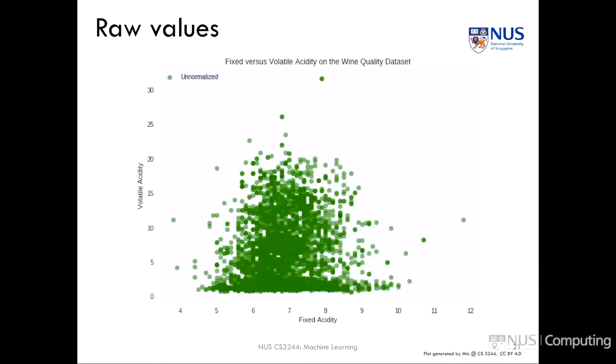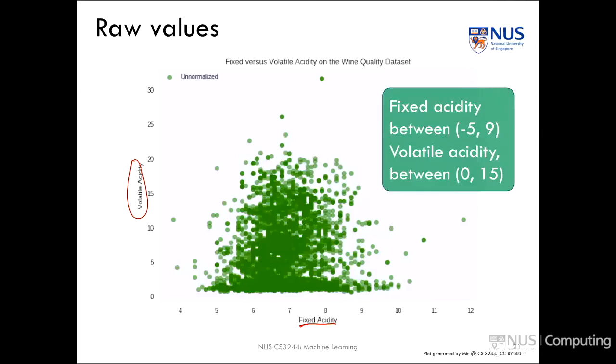Another thing about KNN is it's important to do scaling and normalizations. Let's look at the wine quality data set that we saw in the in-class session. Here we're plotting two particular attributes against each other, which is the first two dimensions of fixed acidity, which ranges from 4 to 12 here, and volatile acidity, which seems to range from 0 up to around 30. This is the plot of all of the white wines in the wine quality data set and those are unnormalized values.